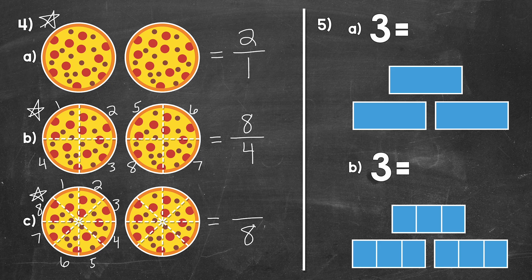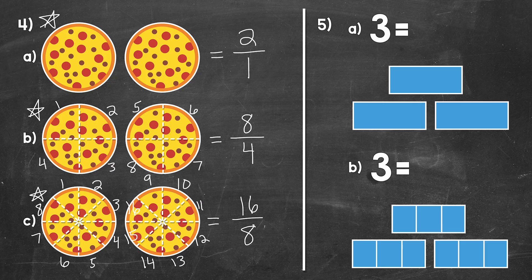We count: 1, 2, 3, 4, 5, 6, 7, 8, 9, 10, 11, 12, 13, 14, 15, and 16. So 16 is our numerator. 16 over 8 is our fraction — 16 eighths. 16 eighths is a fraction equal to two.